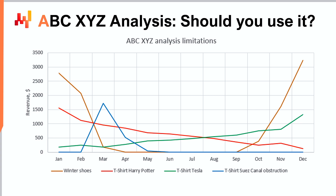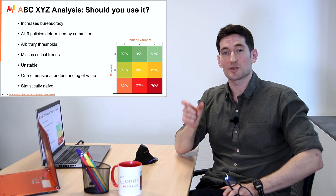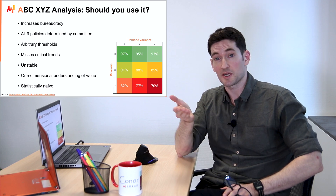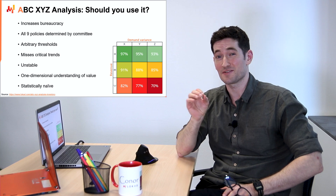Here is a chart of the edge cases within our data — link in the description below. The Harry Potter and Tesla t-shirts, red and green line respectively, both finished as B-Y SKUs and would receive the same service levels. However, this ignores the fact that they are demonstrably trending in opposite directions. ABC XYZ is also unstable in that SKUs can oscillate between categories depending on the given timeframe, and the difference between categories could be vanishingly small.